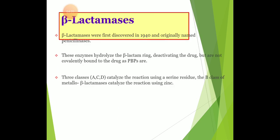Beta-lactamases were first discovered in 1940 and were originally termed penicillinase. These enzymes hydrolyze the beta-lactam ring, deactivating the drug, but are not covalently bound to the drug at the penicillin-binding protein site. Classes A, C, and D catalyze the reaction using a serine residue, while class B metallobeta-lactamases catalyze the reaction using zinc. Beta-lactamase inhibitors are basically inhibiting this beta-lactamase enzyme.